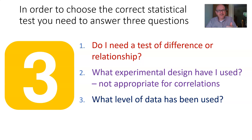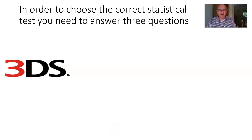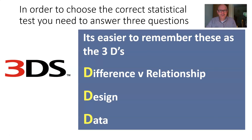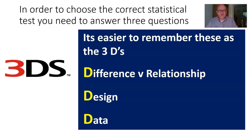And then we've got to say: what level of data am I using? Is it nominal, ordinal, interval, or ratio data? I'm calling it the three D's. When we're going to choose a test, these are the three questions you need to ask: Difference or relationship? If it's a difference, what experimental design? And what level of data? The three D's: Difference, Design, and Data.